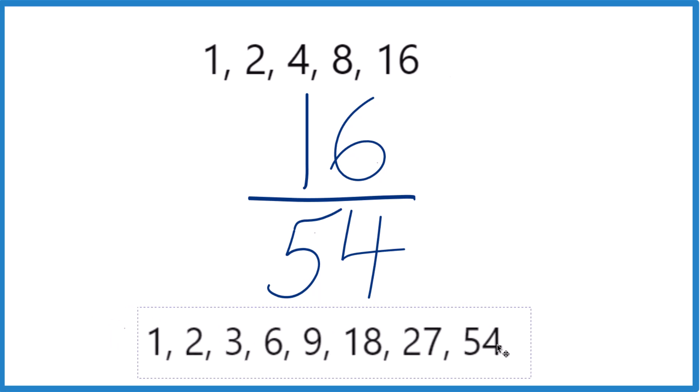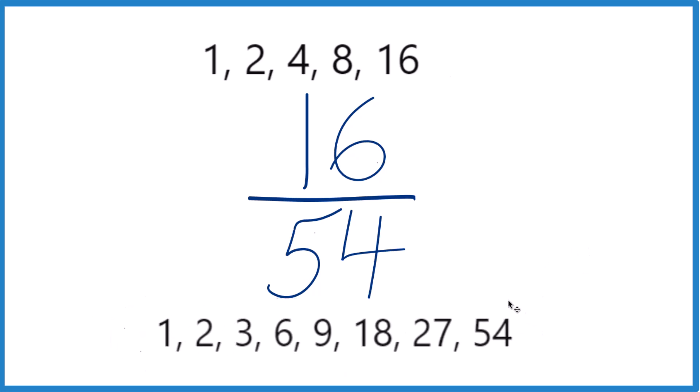For 54, there's actually a few of them here. 1 times 54, 2 times 27, and so on.